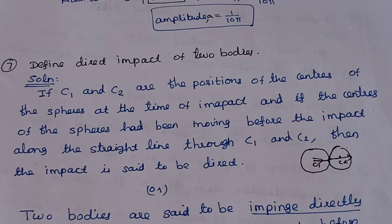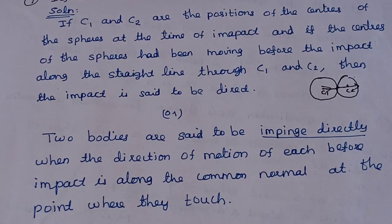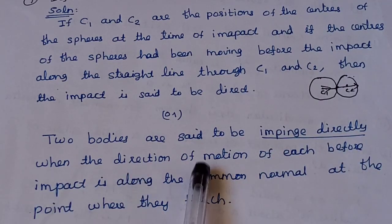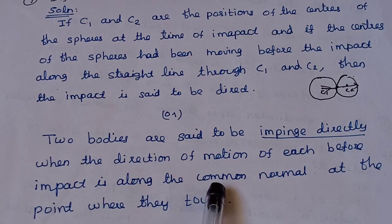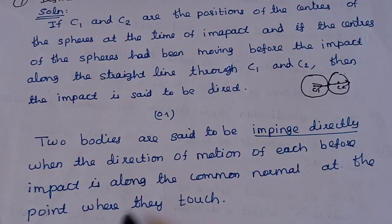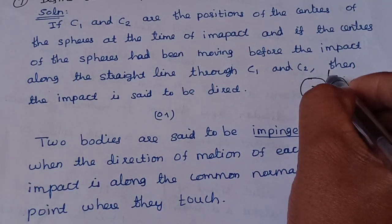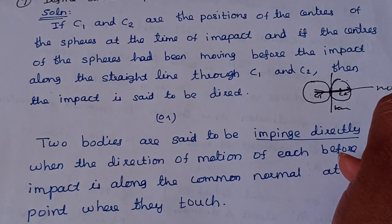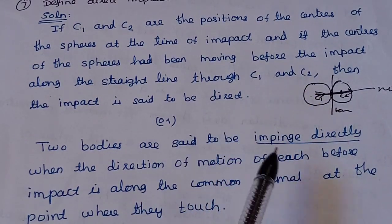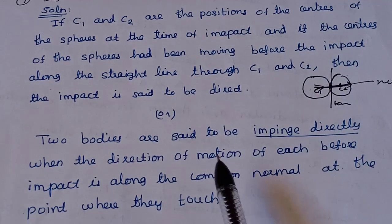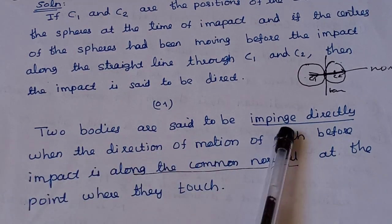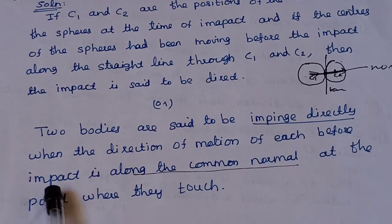When the line joining the centers C1 and C2 is along the straight line of motion, that is direct impact. Two bodies are said to be impinged directly when the direction of motion of each body before impact is along the common normal at the point where they touch.